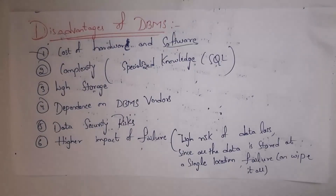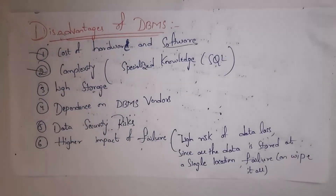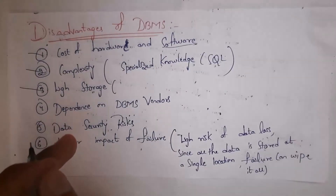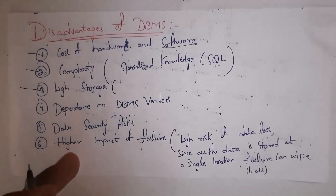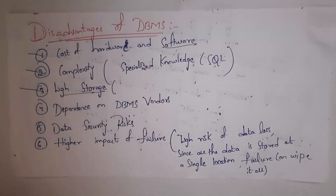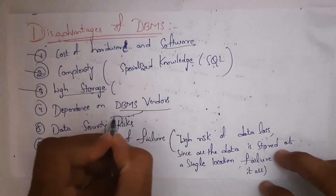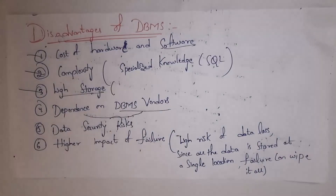The next disadvantage is complexity. Not all users can use DBMS software because you first need to learn SQL — Structured Query Language. Only people with knowledge of SQL can use it, so DBMS is complex. The next disadvantage is high storage — since DBMS stores huge amounts of data, high storage is required.